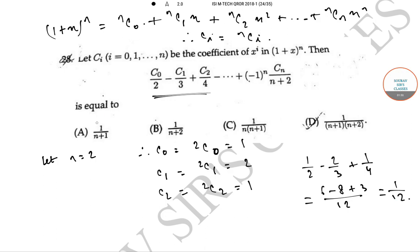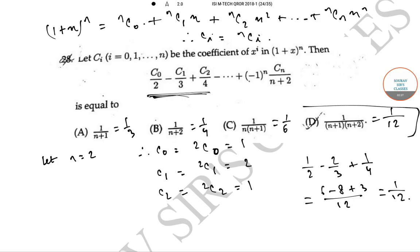Now let us check the options by putting n = 2. Option A gives 1/3, option B gives 1/4, option C gives 1/(2×3) = 1/6, and option D gives 1/(3×4) = 1/12. Since our computed value is 1/12, option D is the correct answer.